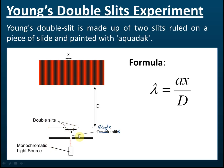So the red light is directed towards a single slit. After it passes through the single slit, it will spread due to diffraction. It will then pass through the two slits, and again it undergoes diffraction and spreads again.